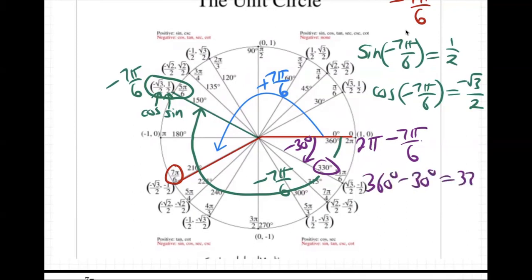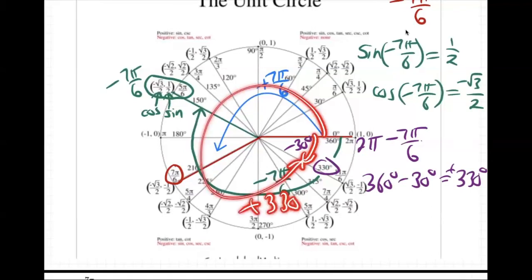360 minus 30 degrees, you'd get positive 330 degrees. It's kind of scribbly. Sorry about that. There we go. Yeah. So my point is that negative 30 degrees is the same as positive 330. They're the same spot. Because it's 360 minus 30, right? Whenever you add or subtract 360, you end up at the same spot. Because that's spinning all the way around.